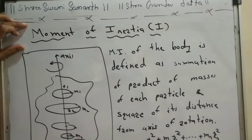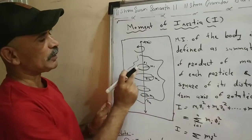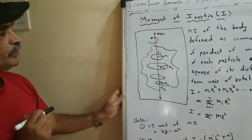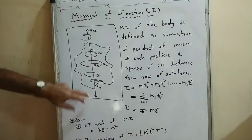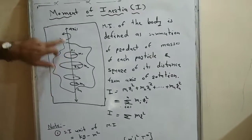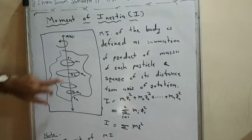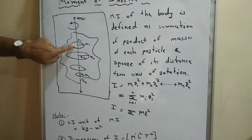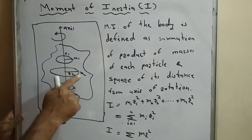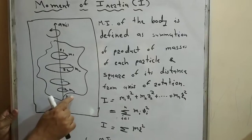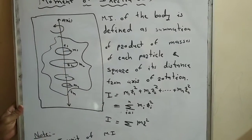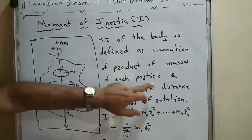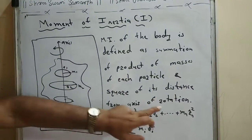Moment of inertia is the physical quantity defined as the product of the mass of each particle and the square of its distance from the axis of rotation. This body consists of N particles of masses M1, M2, ... Mn. The distance between the axis of this body and particle M1 is R1, so the contribution is M1 × R1². Moment of inertia is defined as the product of the mass of each particle and the square of its distance from the axis of rotation.